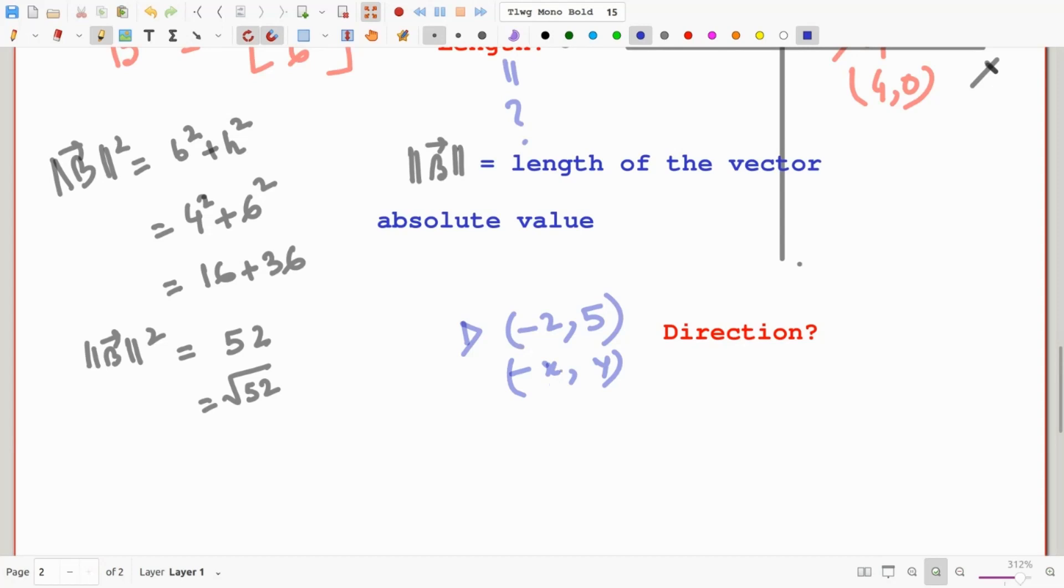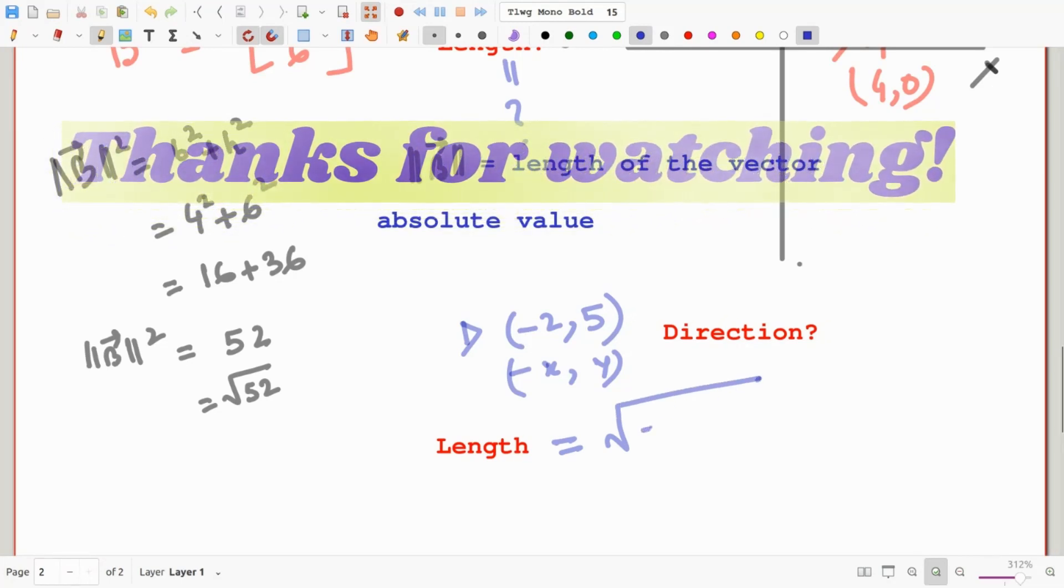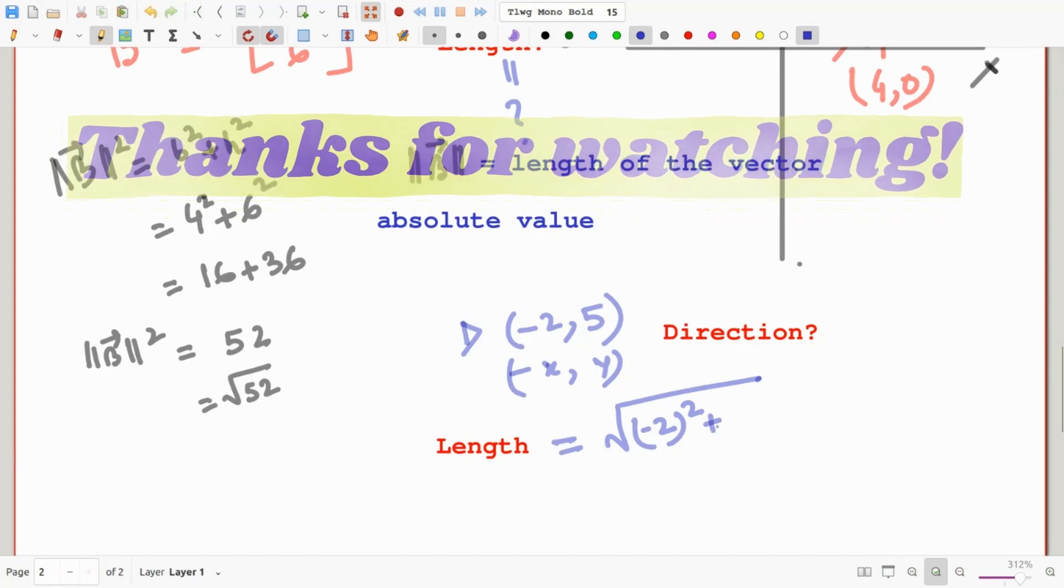Now we are going to find the length of this vector using the Pythagorean theorem. So we will just compute the height squared and base squared. And in this case, we know that our base is 2 along negative x axis and height is 5 along positive y axis. Therefore, applying Pythagorean theorem, we obtain the length of this vector. This equals square root of minus 2 squared plus 5 squared.